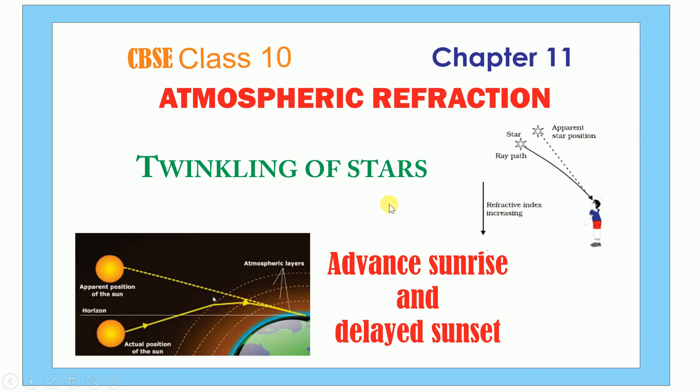Today we are going to discuss atmospheric refraction, and its effects: the twinkling of stars, advanced sunrise, and delayed sunset. Atmospheric refraction means refraction caused by the atmosphere. Refraction occurs when light passes from one medium to another — when light passes from a rarer medium to a denser medium, it moves towards its normal.